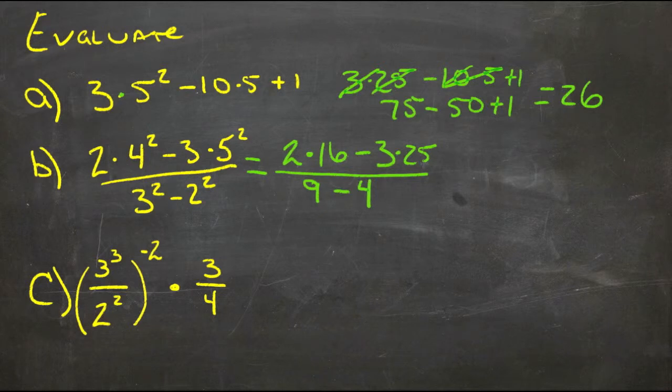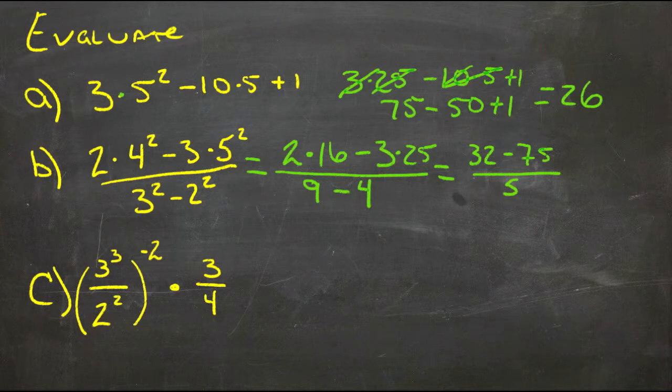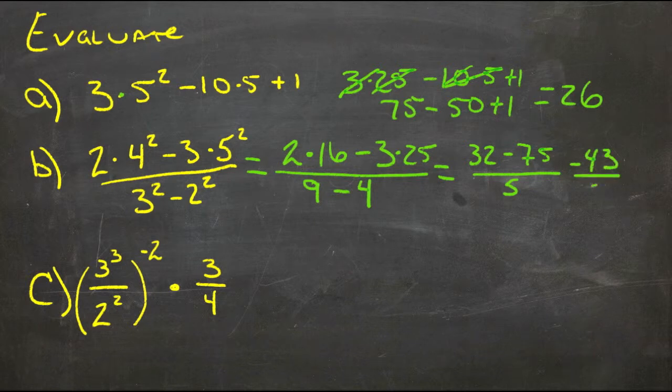Now we have some multiplication on top, so we have two times sixteen gives us thirty-two minus three times twenty-five, that's seventy-five, over nine minus four, which is five, and thirty-two minus seventy-five is negative forty-three over five. So we have negative forty-three-fifths.